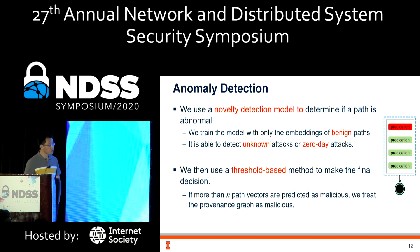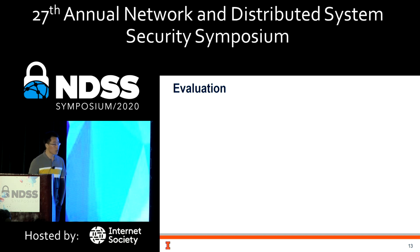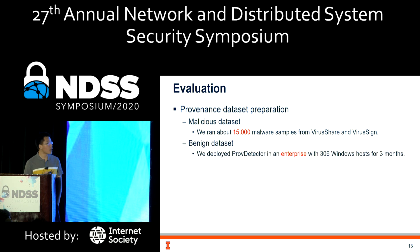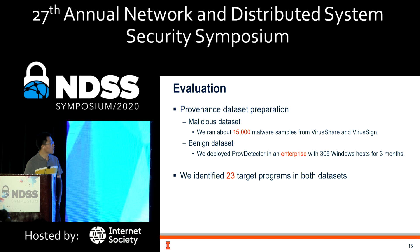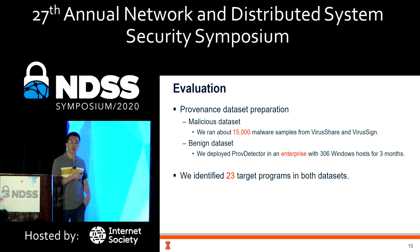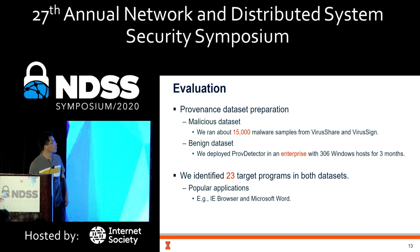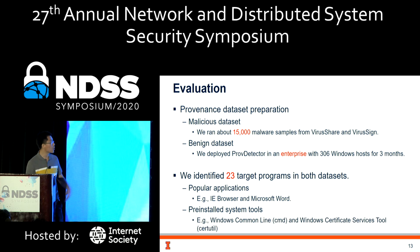Using this workflow, we built a prototype and conducted evaluation. To prepare the dataset, we ran about 15,000 malware samples collected from various sources. For the benign dataset, we deployed our approach in an enterprise for three months. We identified 23 target programs present in both the benign and malicious datasets, including popular applications like IE and Microsoft Word, and system tools like CMD and PowerShell.